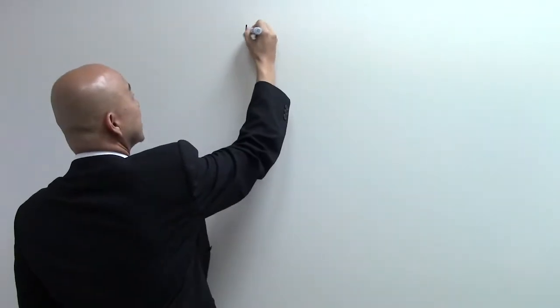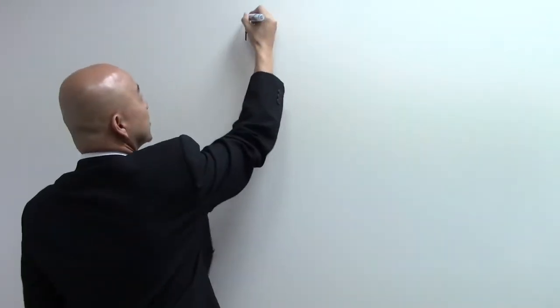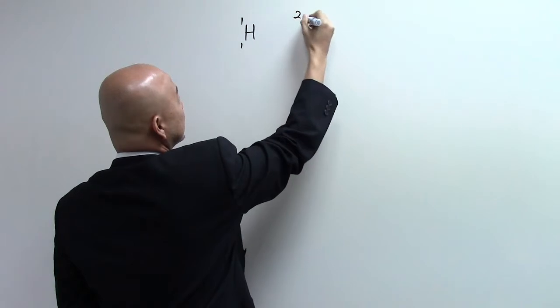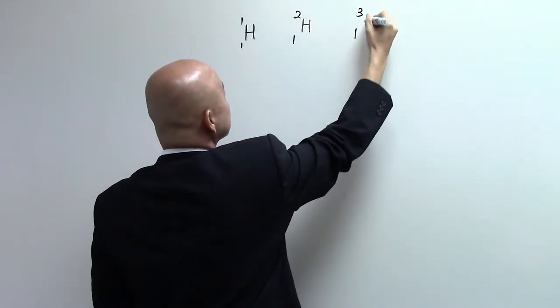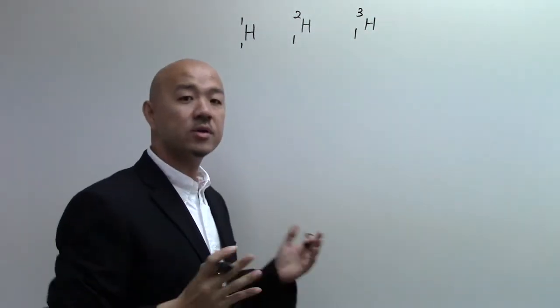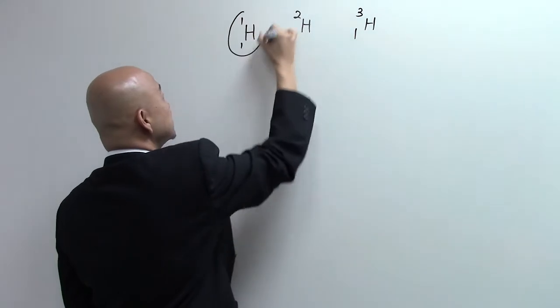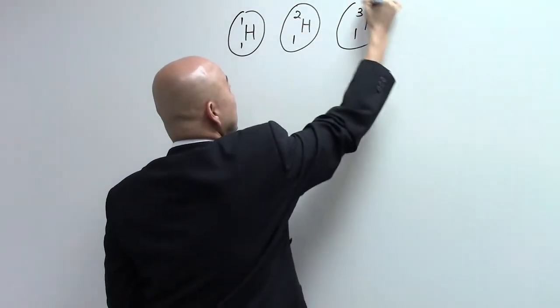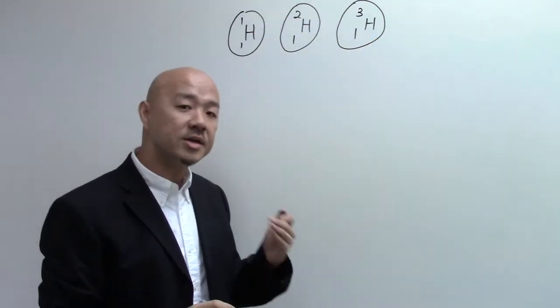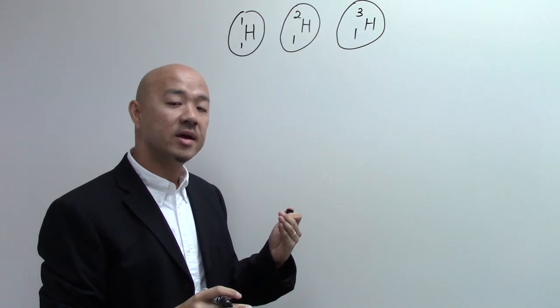One of them is hydrogen itself. Hydrogen exists in three isotopes — the first, the second, and the third. So if you look at them they are actually atoms, spherical atoms. So there are three isotopes of hydrogen.